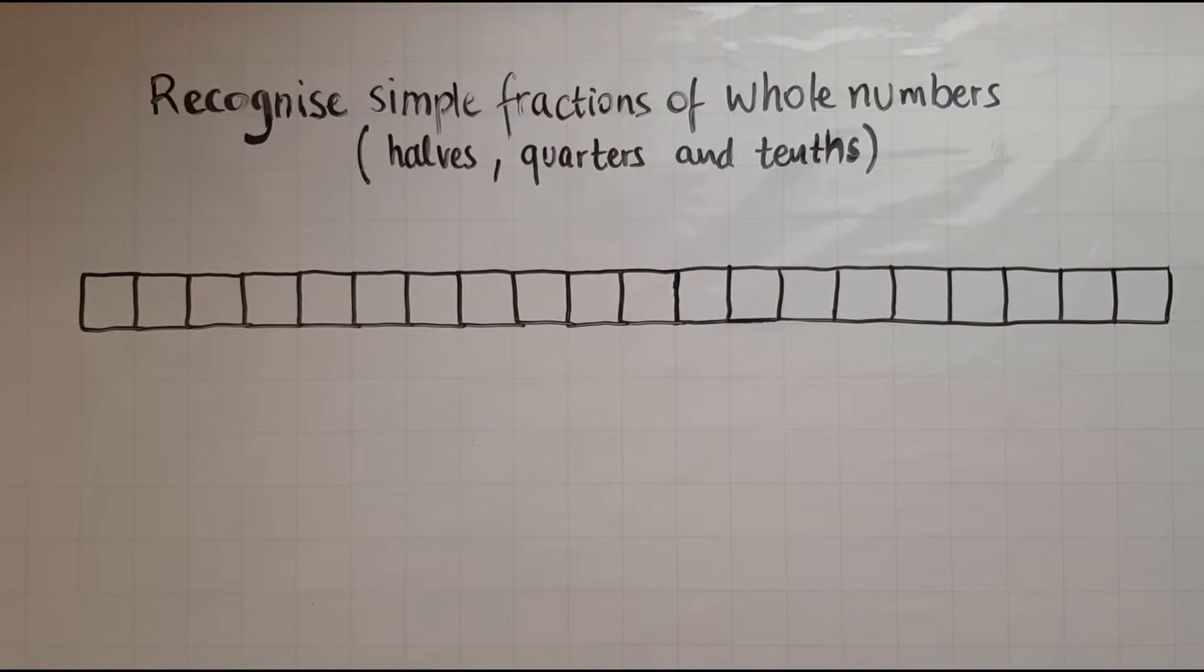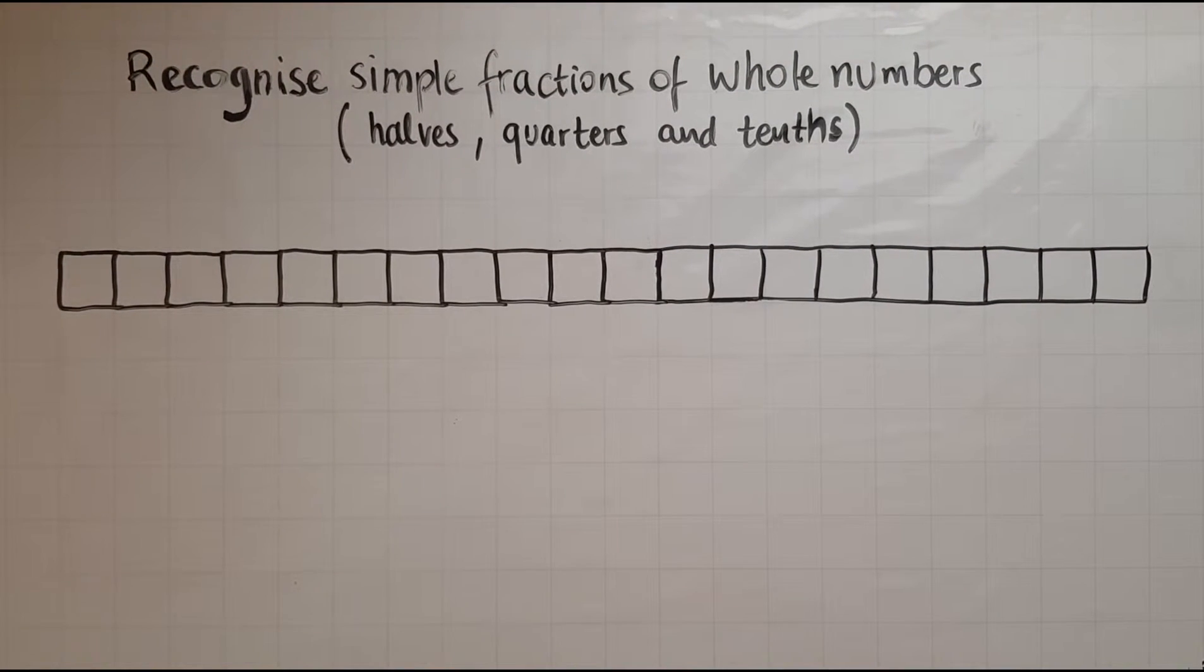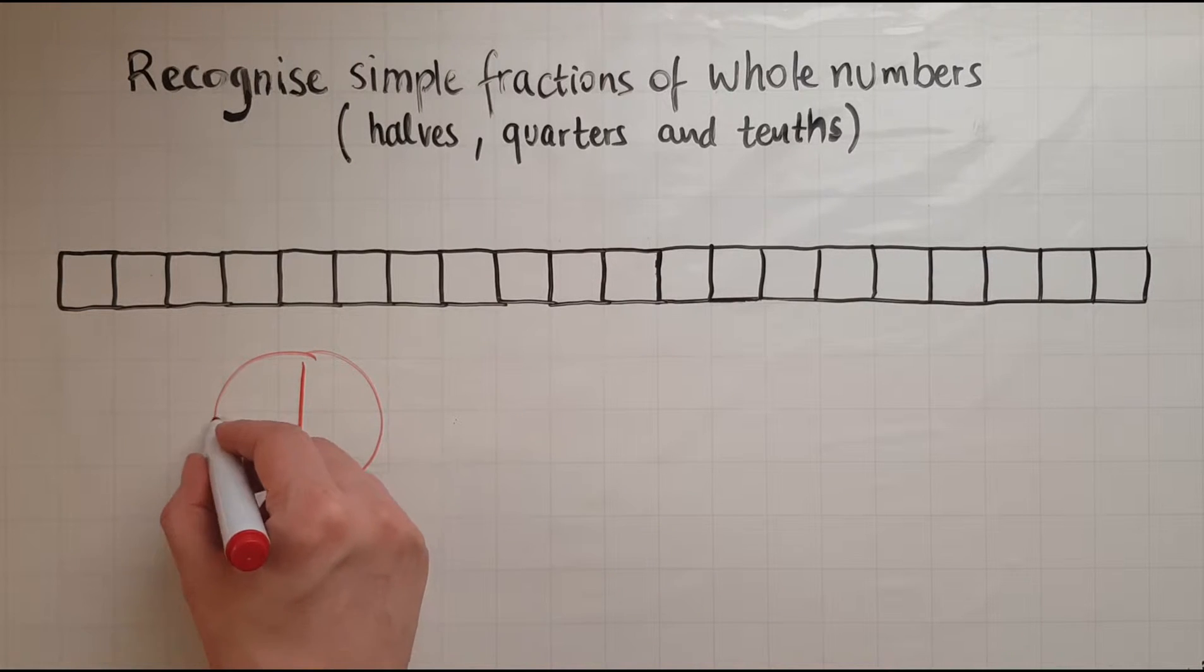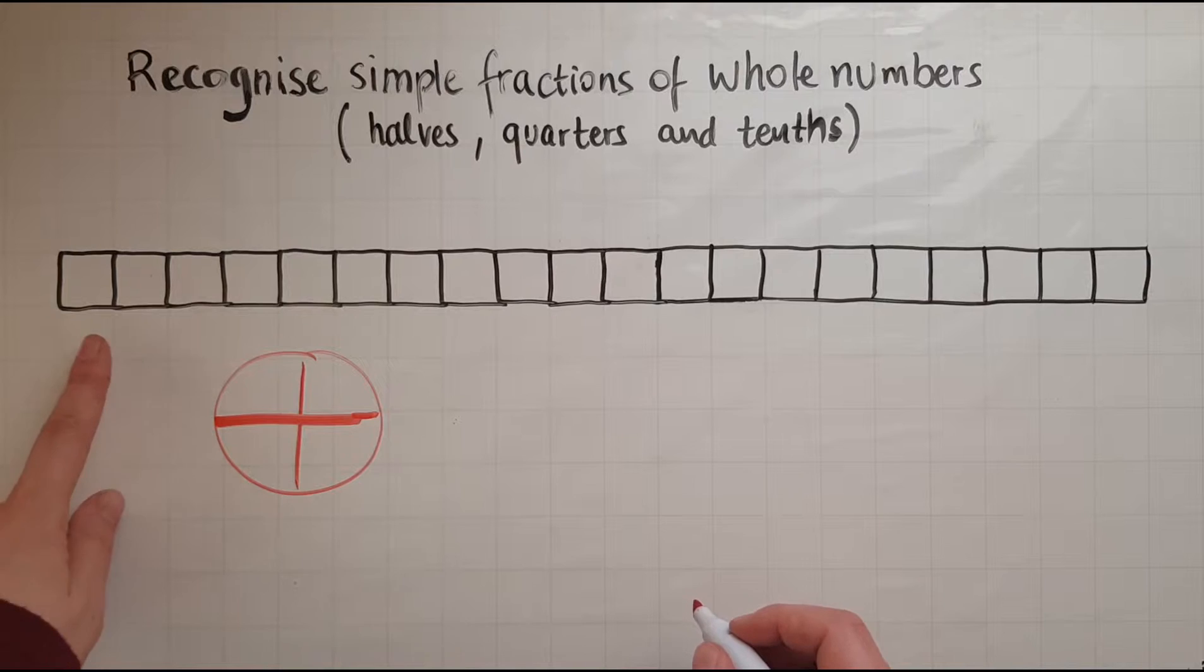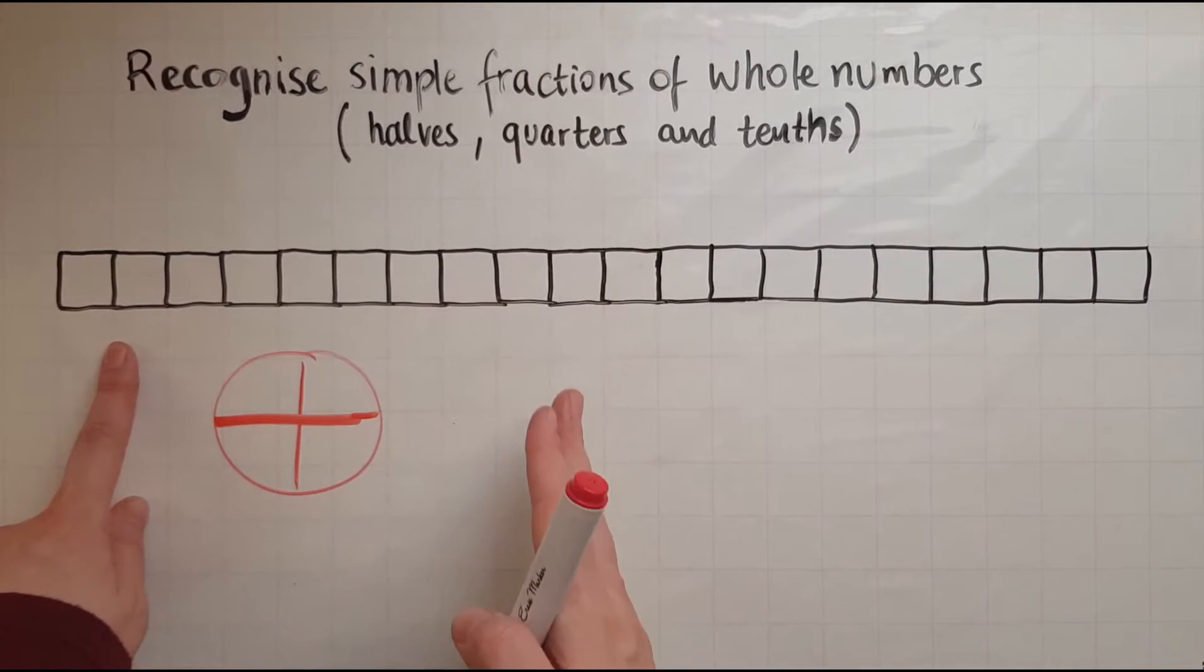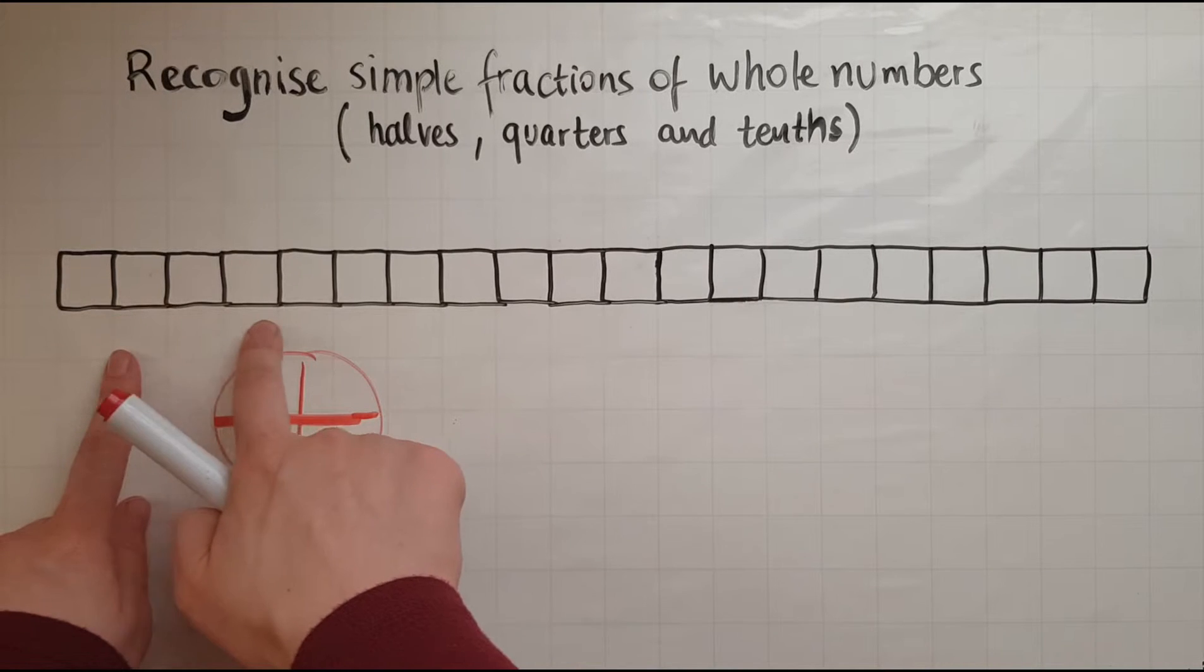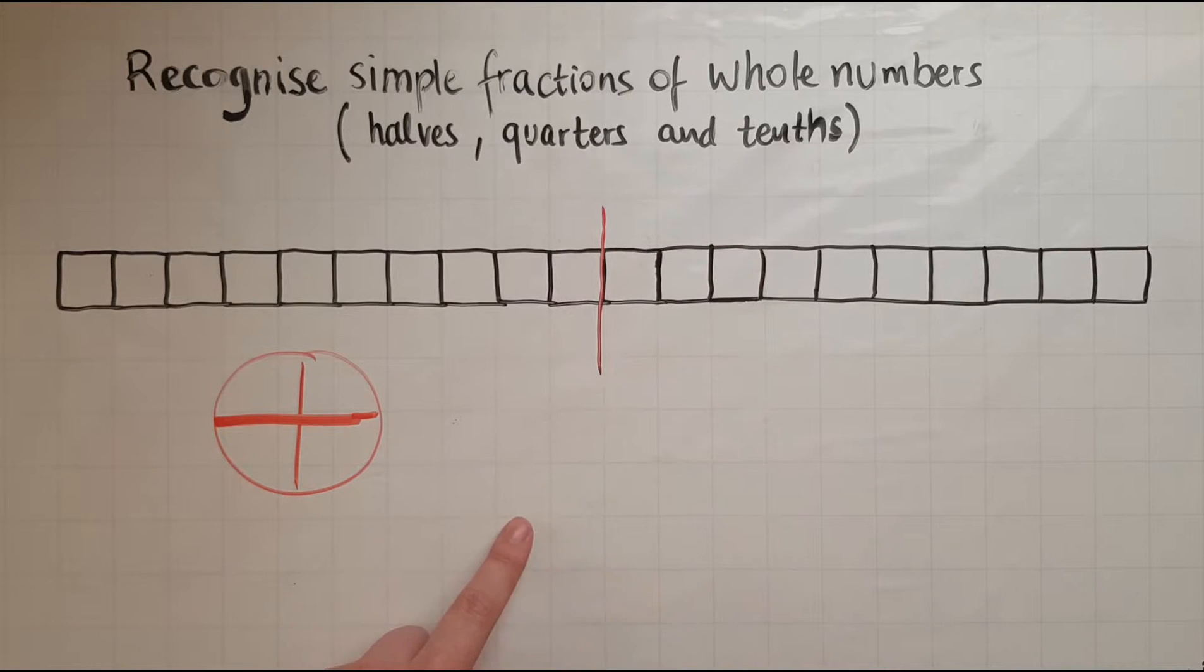We'll now look at quarters of whole numbers. So I've got 20 again, 20 squares lined up. To find a quarter, if you remember, if you recall from the pizza, it was cut it in half and half again. So if I cut this in half, I would have 10 on each part. So I'd have 1, 2, 3, 4, 5, 6, 7, 8, 9, 10. So that would be 10.